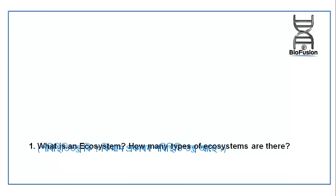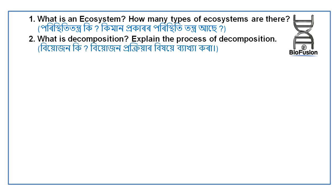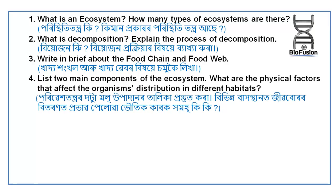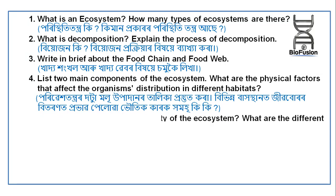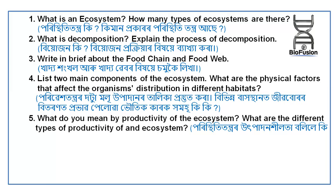Five-mark questions: What is an ecosystem and how many types of ecosystem are there? What is decomposition — explain the process of decomposition. Write briefly about the food chain and food web. List the two main components of an ecosystem. What are the physical factors that affect organism distribution in different habitats? What do you mean by productivity of the ecosystem and what are the different types of productivity?